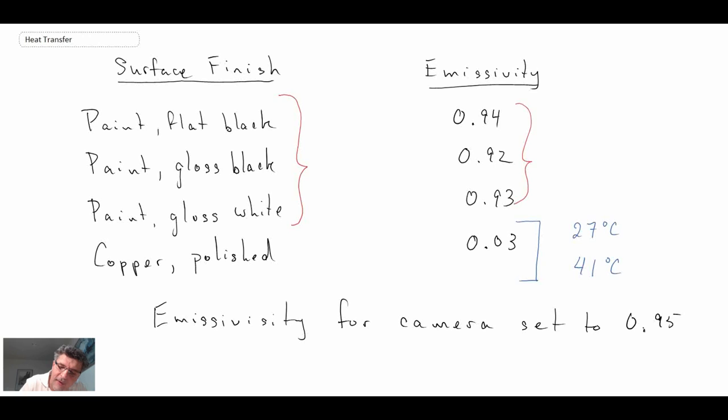So what does that mean? What that means is that if you wanted to use an infrared camera to measure the surface temperature of an object, you need to know what the emissivity of that object is. And so if you're measuring something such as copper, polished copper, chances are you're going to get an incorrect result if you do not adjust the emissivity accordingly in order to correspond to whatever the surface finish of that copper would be.